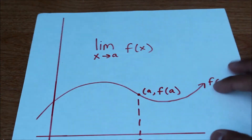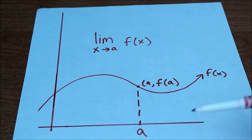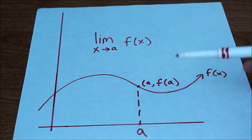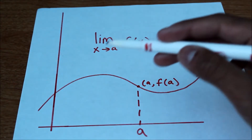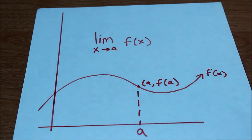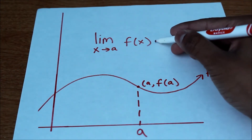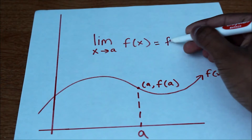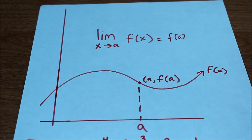We have this graph right here — we have the function f of x and we have the point x equals a, which corresponds to the point (a, f(a)). We notice that f of x is continuous at x equals a, and we want to find the limit as x approaches a of f of x. Well, if we follow the definition, because this function is continuous, this would just equal f of a. It's as simple as that.